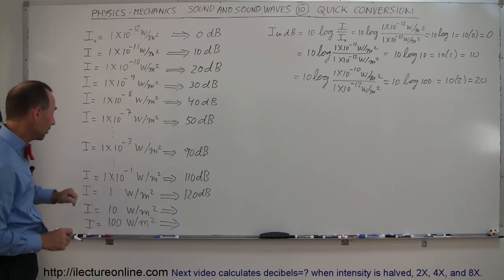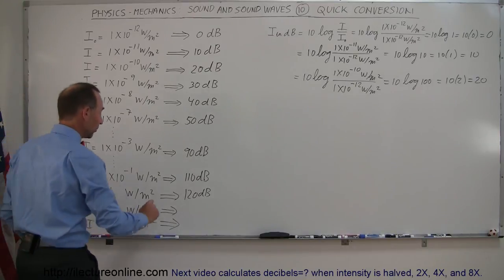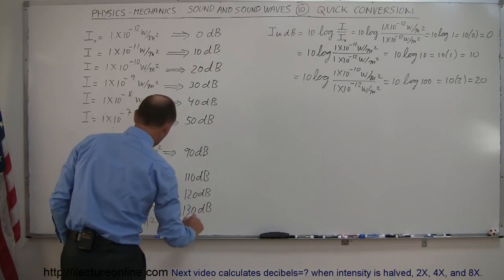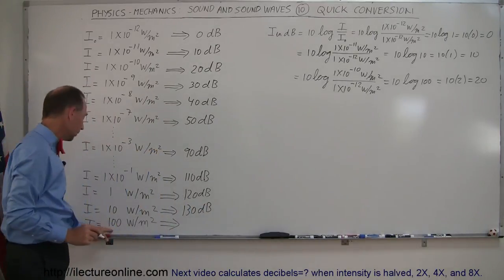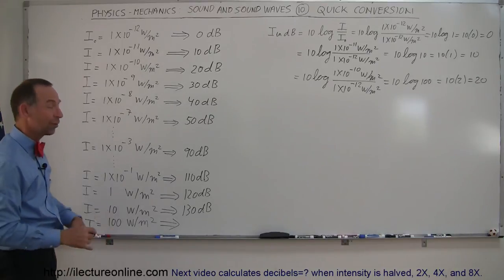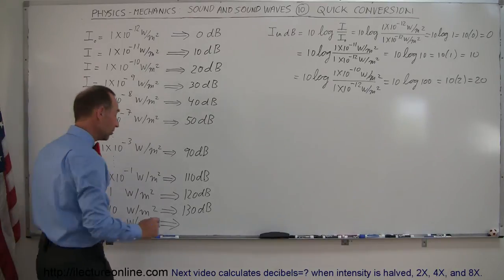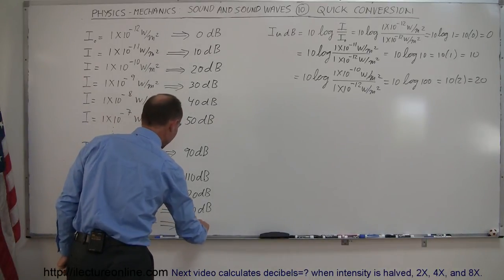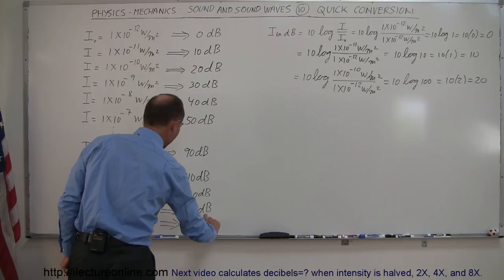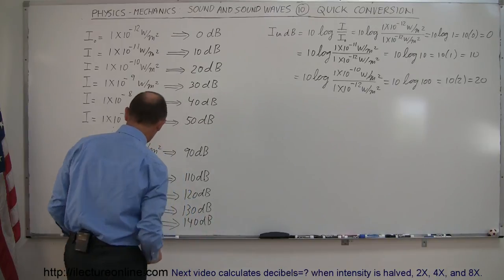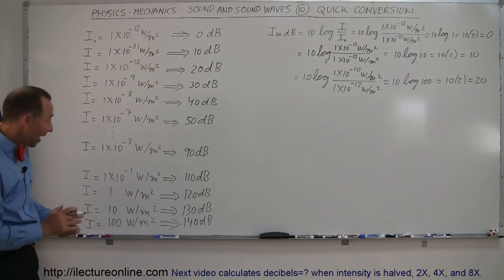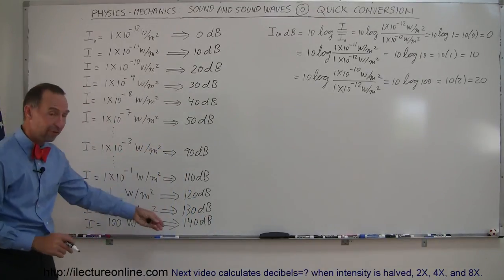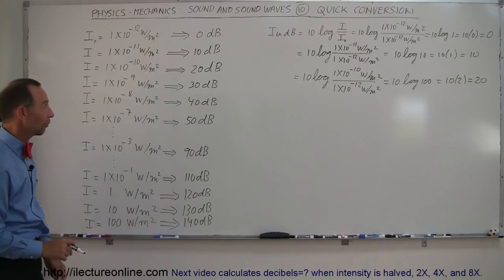10 watts per square meter is 10 times louder than 1 watt, so this becomes 130 decibels. And 100 watts per square meter is 10 times as big as 10 watts, so that's another 10 decibels — 140 decibels. And if you have a sound with intensity of 1,000 watts per square meter, that would be 150 decibels, and so forth.